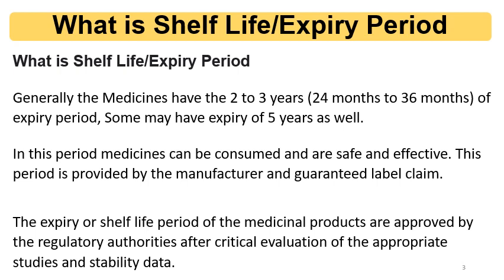This period is given by the manufacturer, who provides the guarantee of the label claim during this period. After completion of this period, the product may get degraded or the label claim cannot be guaranteed. The expiry period or shelf life period of medicinal products is approved by the regulatory authorities. Without regulatory approval, medicines cannot be sold in the market. Therefore, along with product approval, regulatory authorities give approval of expiry dating, and that expiry date only can be printed by the manufacturer on the product label.